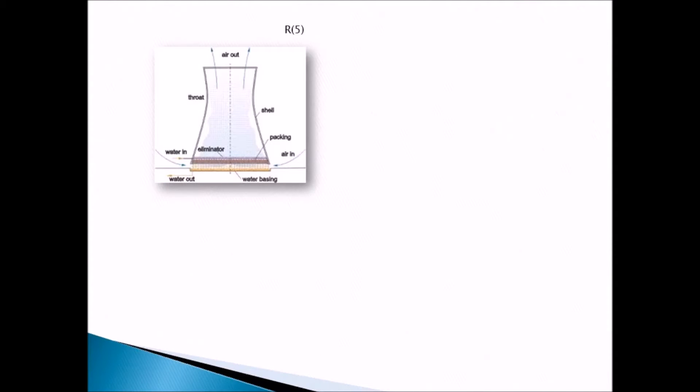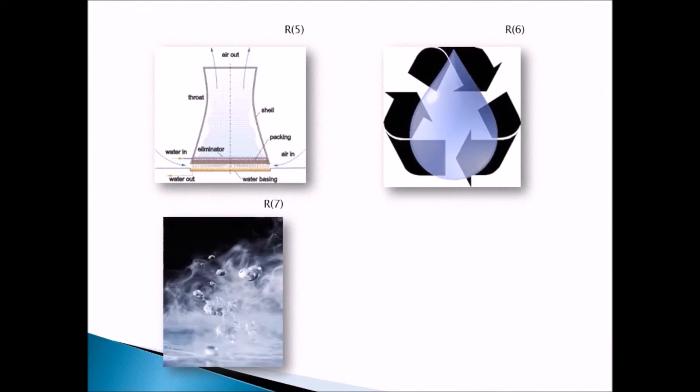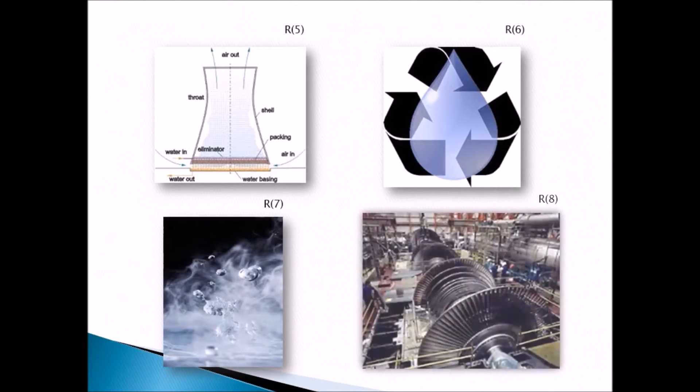The introduction of cooling towers in power plants enables the recycling of water that is converted to superheated steam to drive the turbine, thus greatly reducing the usage of water.